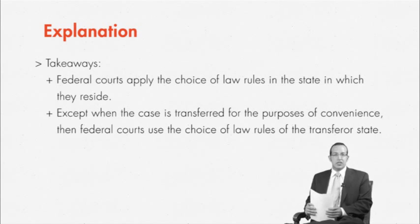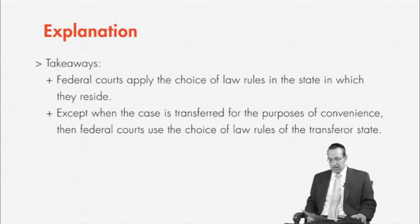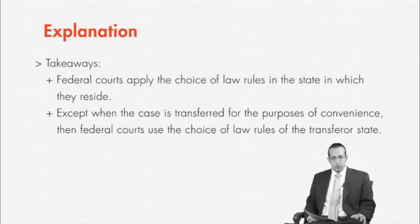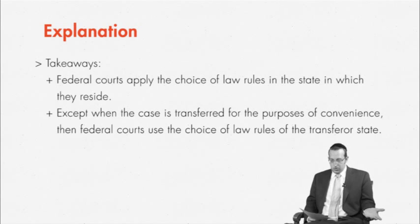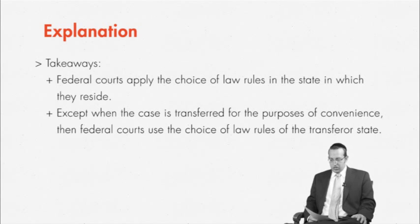Now let's say that the case was transferred to New Mexico not for convenience, but because there was an improper venue. In that instance, you look at the case as though it were dismissed and refiled in New Mexico. The reason being it shouldn't have been filed in Delaware in the first place — the courts have no basis to assume jurisdiction, it's not discretionary. When venue was improper, the plaintiff had no business filing there. The transfer breaks all ties to the original filing. As a result, we apply the choice of law rules of the transferee state.